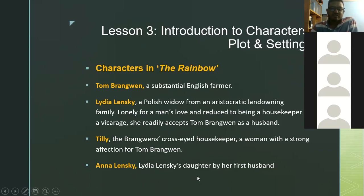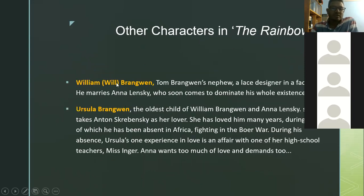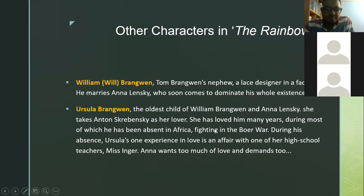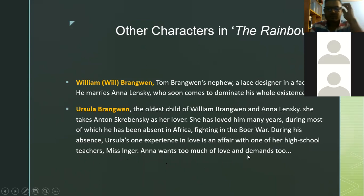Anna Lansky is Lydia Lansky's daughter by her first husband. William, or Will Brangwen, is Tom Brangwen's nephew, a lace designer in a factory. He marries Anna Lansky, who soon comes to dominate his whole existence. Ursula Brangwen represents the third generation — the oldest child of William Brangwen and Anna Lansky. She takes Anton Skrebensky as a lover, having loved him for many years, during most of which he has been absent in Africa fighting in the war. During his absence, Ursula's one experience in love is an affair with one of her high school teachers, Miss Inger, which is a same-sex relationship.